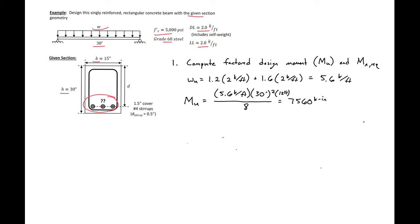Then we can find our MN required. Our MN required is our MU, 7,560, divided by our phi, 0.9. This phi is assuming tension controlled behavior, so we'll need to check that we're tension controlled as we move forward. We'll get our MN required then to be 8,400 kip inches. This is the value we'll use moving forward.